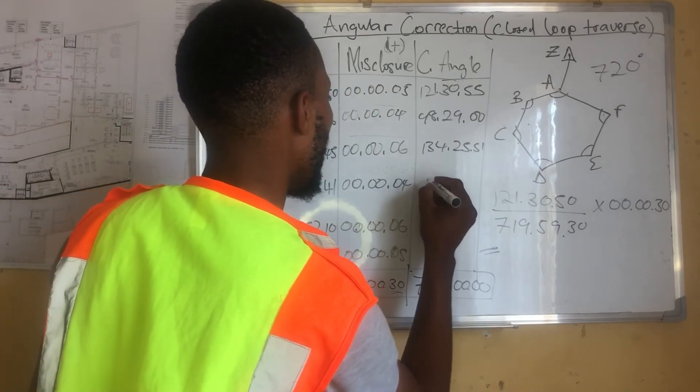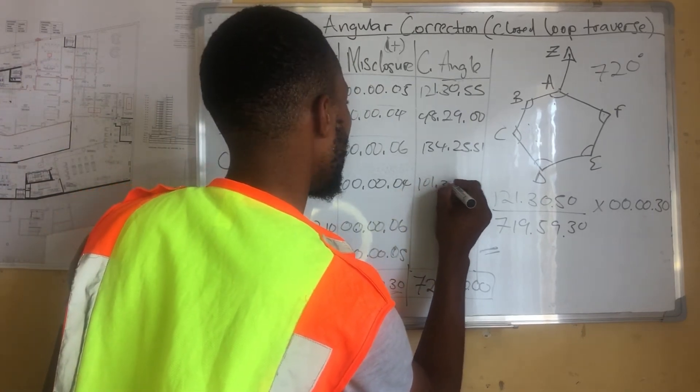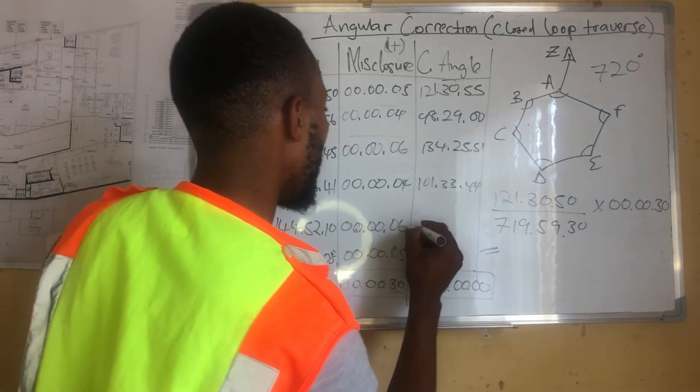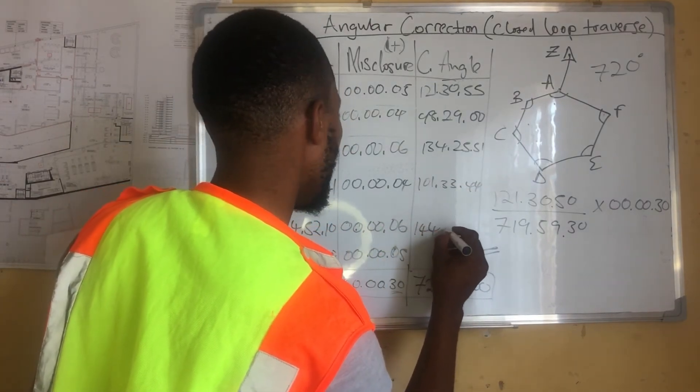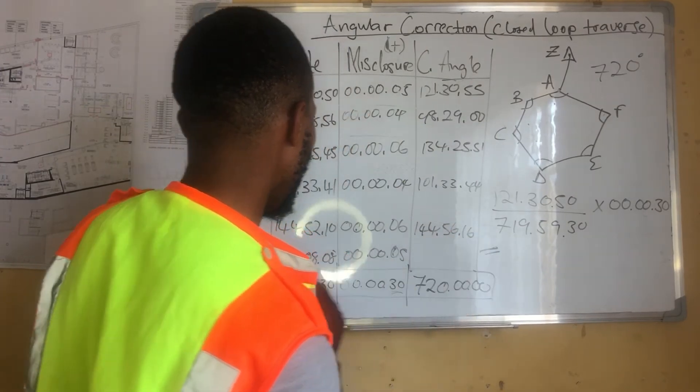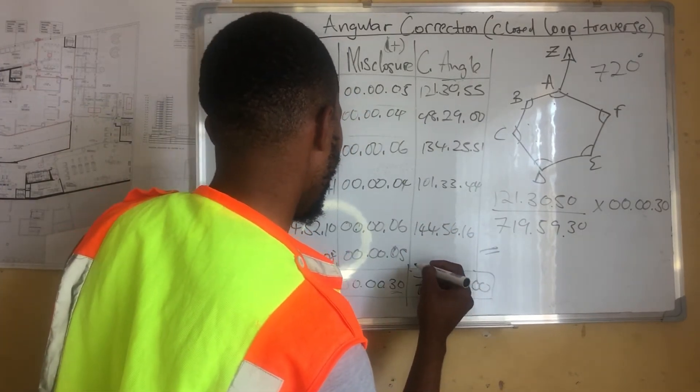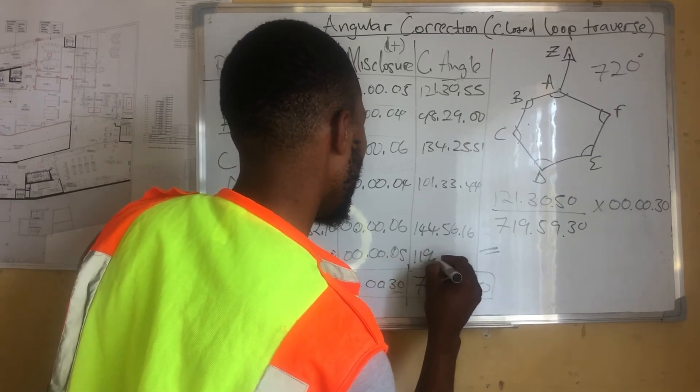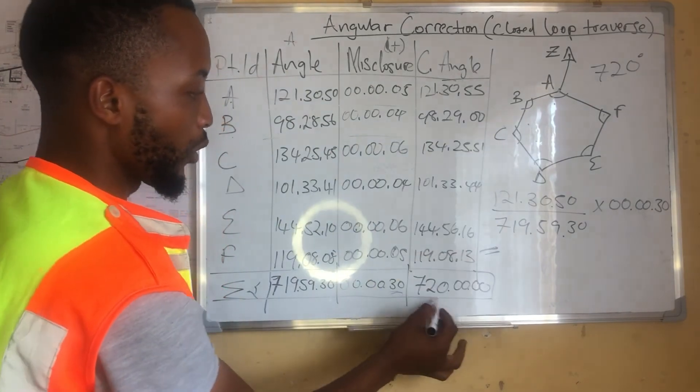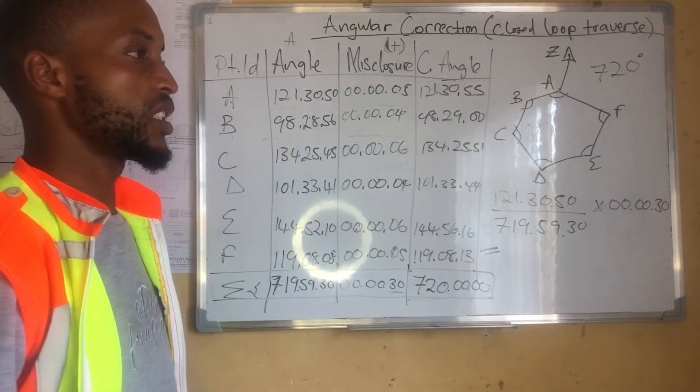Then, we have 101, 33, 44. Then, for this one, we have 144, 52, 16. And, for this one, we have 119, 8, 13. If we add these, we are going to get our 720 degrees.